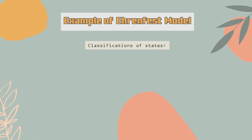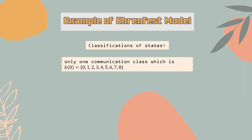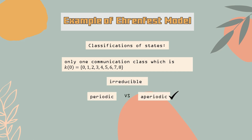For the classification of states, it can be seen that state zero communicates with all states including itself, so there is only one communication class and this Ehrenfest Markov chain is irreducible. Since p_ii > 0, the chain is aperiodic, and each state is proved to be recurrent.